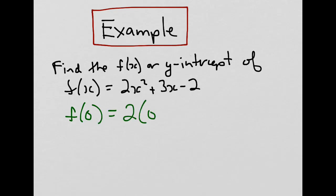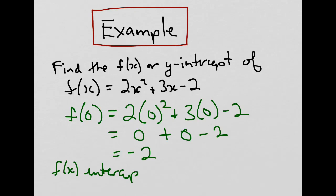So we go 2 times 0 squared plus 3 times 0 minus 2. 0 squared is 0 times 2 is 0. 3 times 0 is 0. Minus 2 gives us the value of negative 2. Therefore, the f(x)-intercept is negative 2, or the point (0,-2).